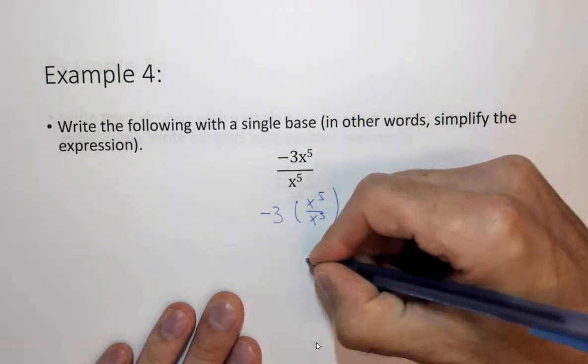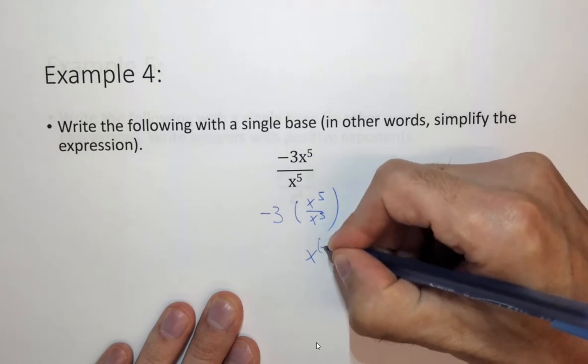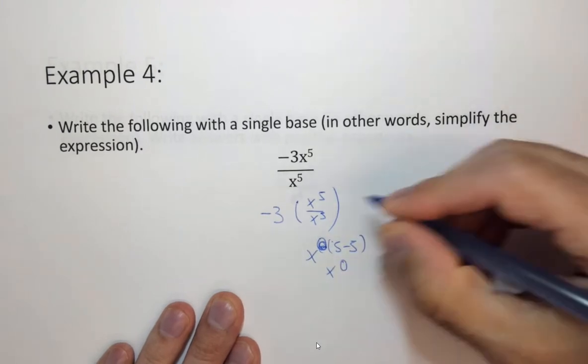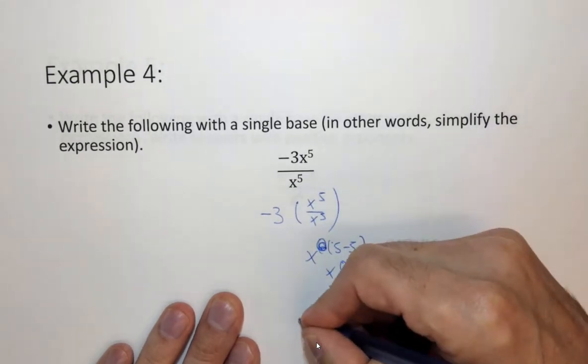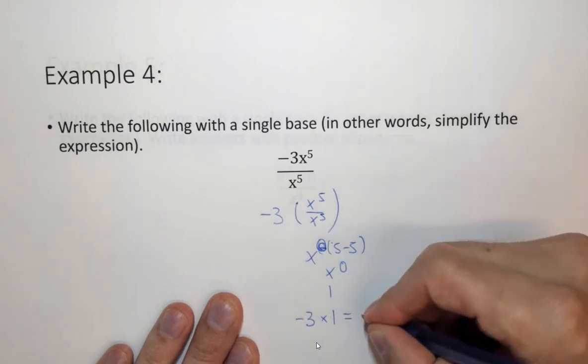Now we're dividing. So this is x to the 5, let me rewrite this, 5 minus 5 or x to the 0. x to the 0 is equal to 1. So we have minus 3 times 1 which equals minus 3.